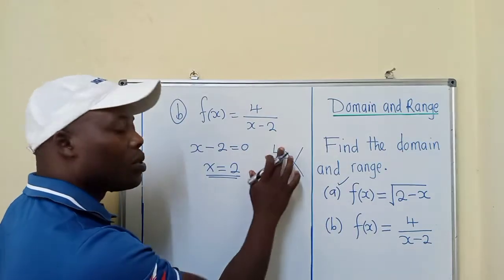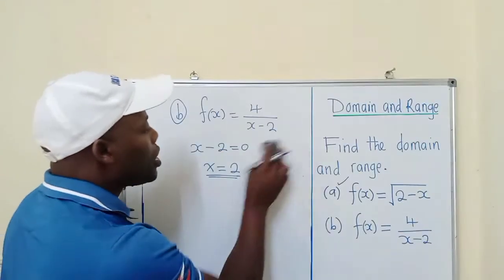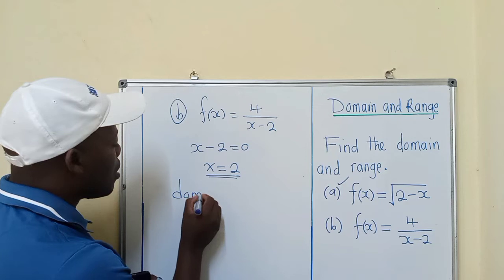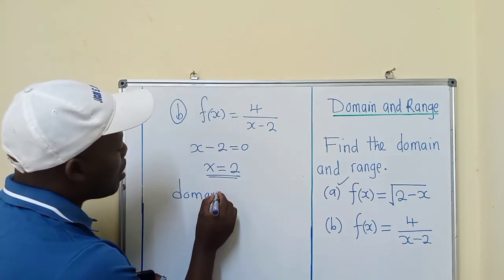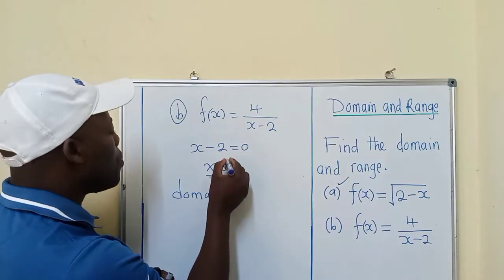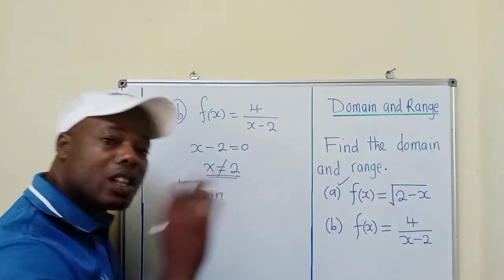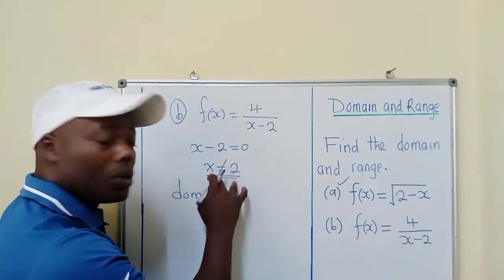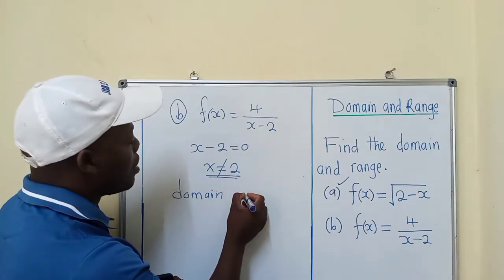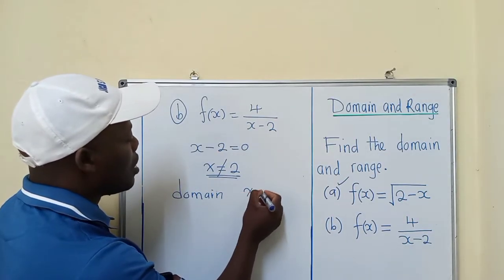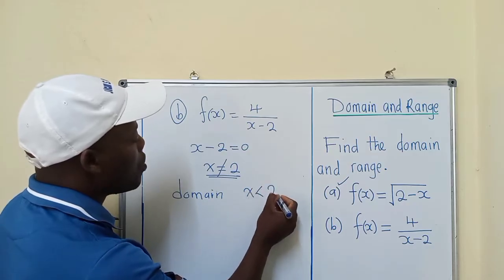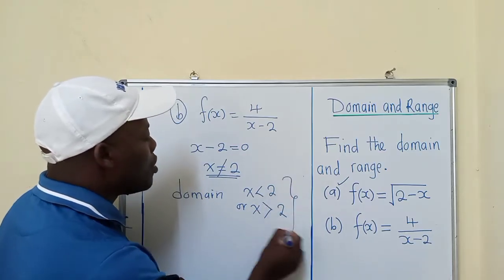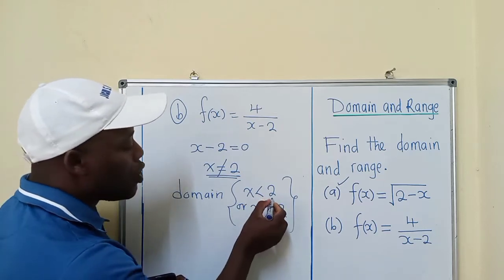So our domain will be anything but 2. Any real number will be okay except 2. We're going to write it as x < 2 or x > 2. This implies that 2 is not included.